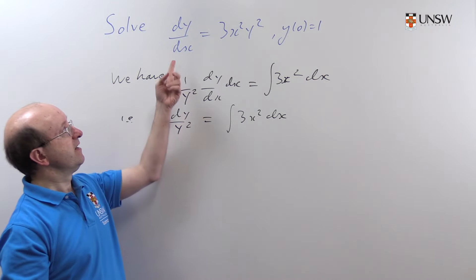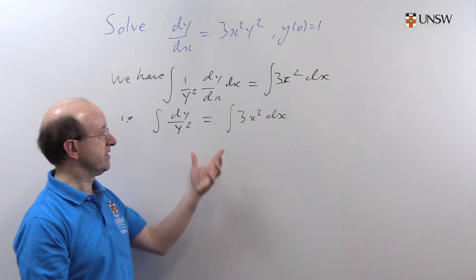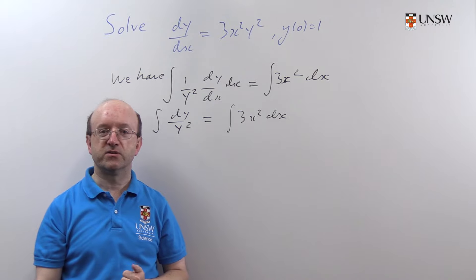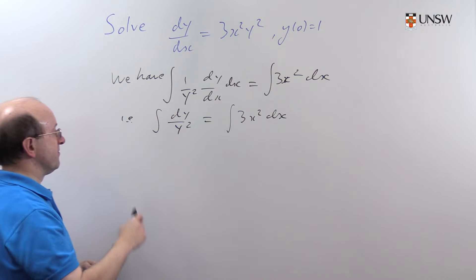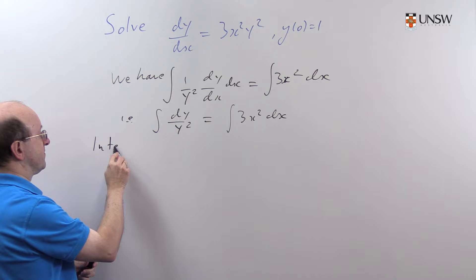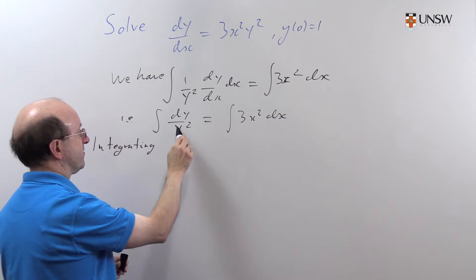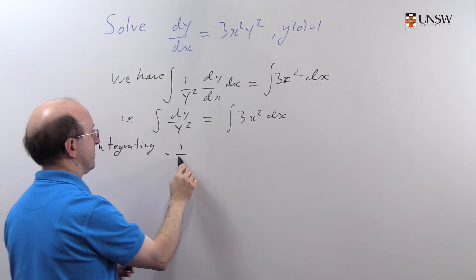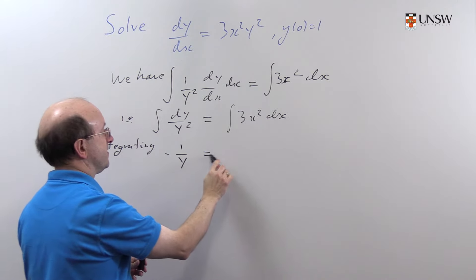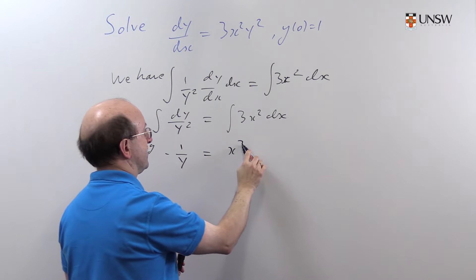It's quite common in fact to go straight from the initial setup to this equation here. So we integrate both sides. On this side we're going to get -1/y, and on this side we're going to get x³.